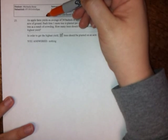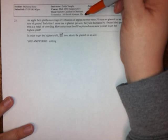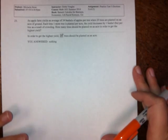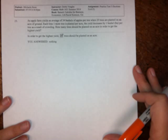well they're telling us that an apple farm yields an average of 34 bushels per apple tree when 20 trees are planted on an acre of ground. Each time one more tree is planted per acre, the yield decreases by one bushel per tree as a result of crowding. How many trees should be planted on an acre in order to get the highest yield?